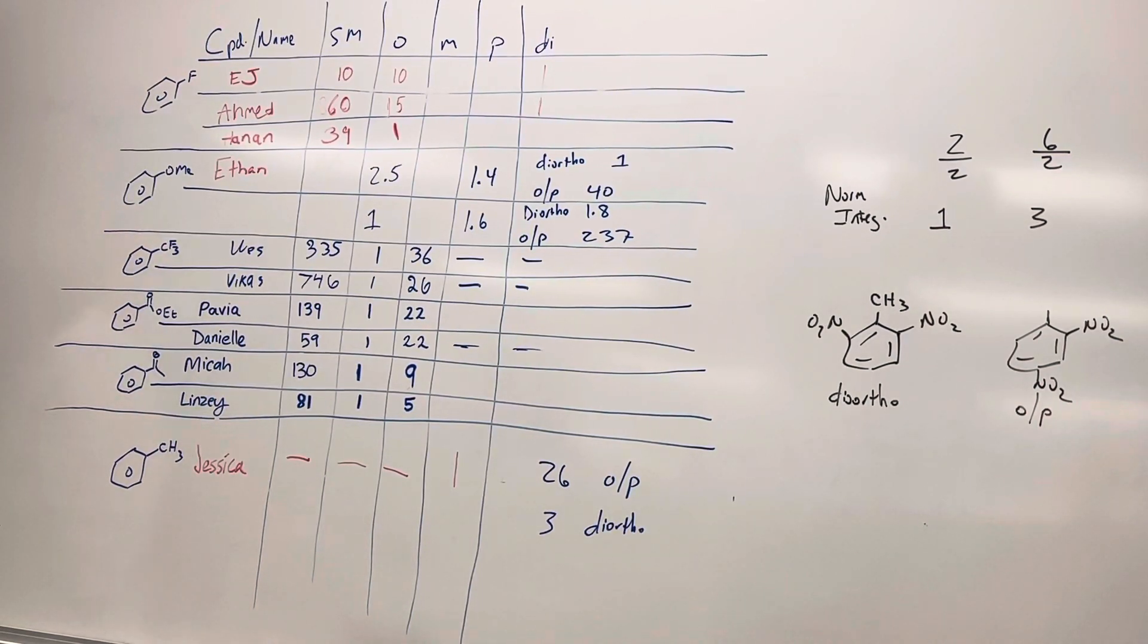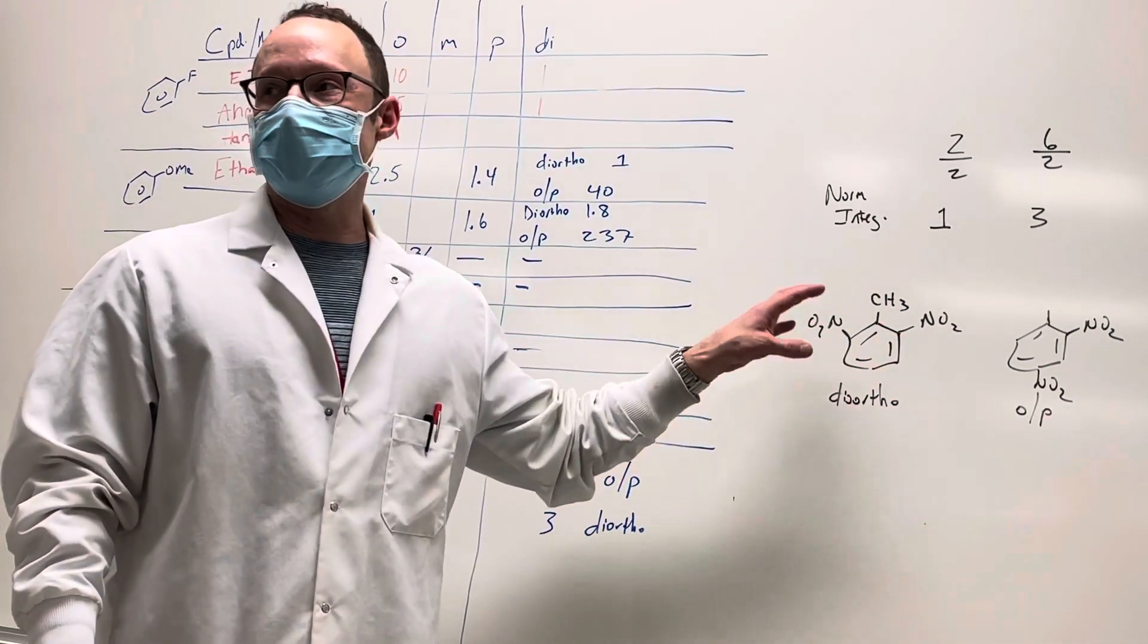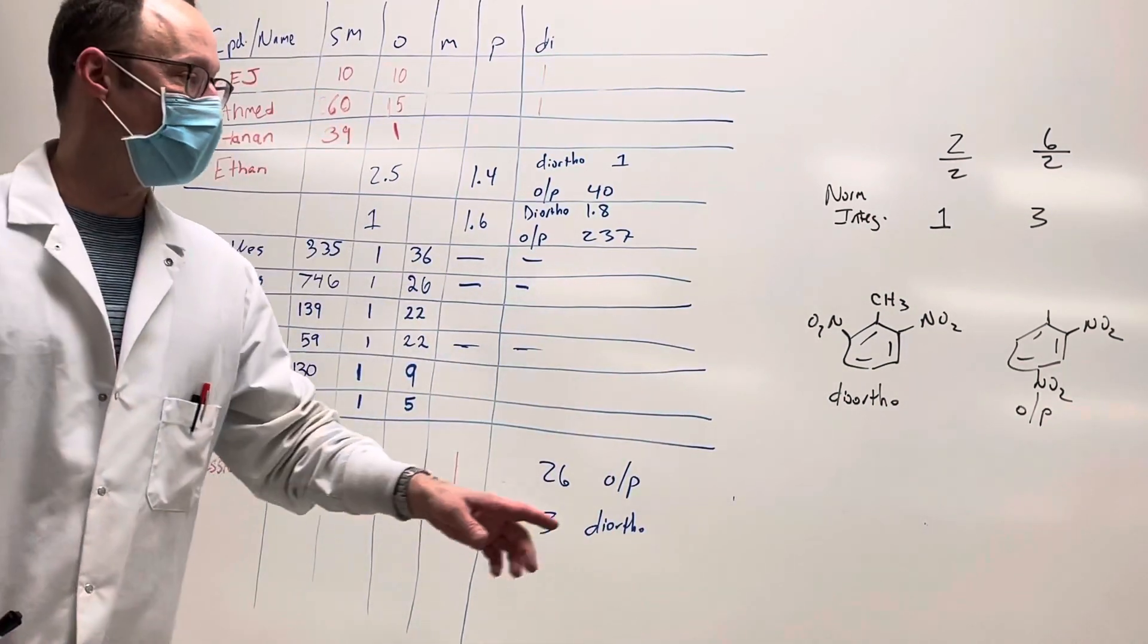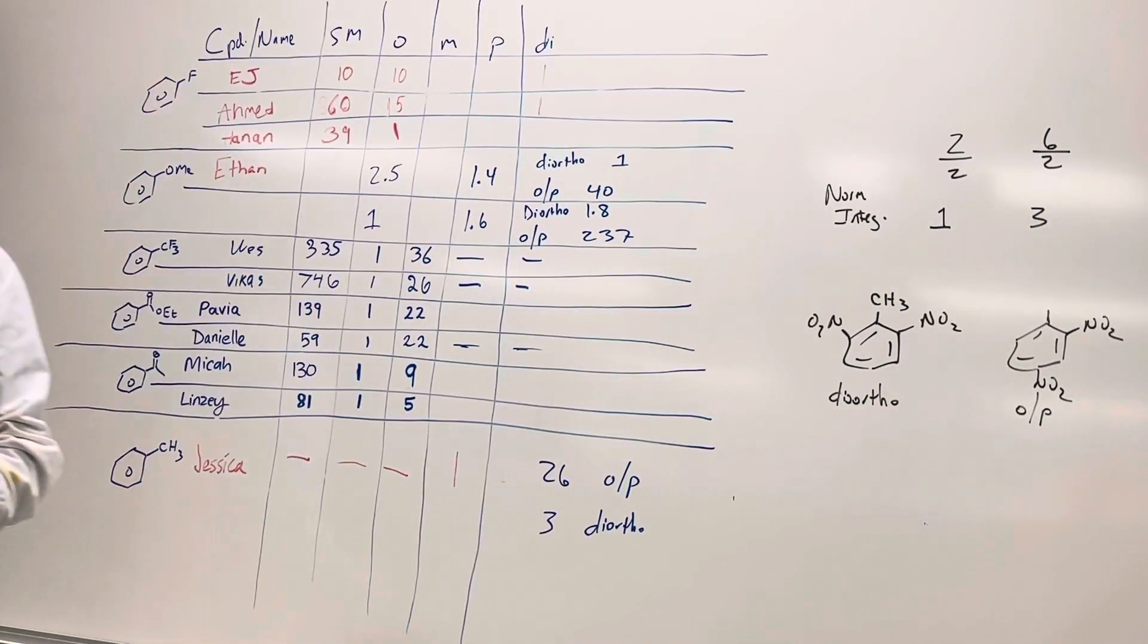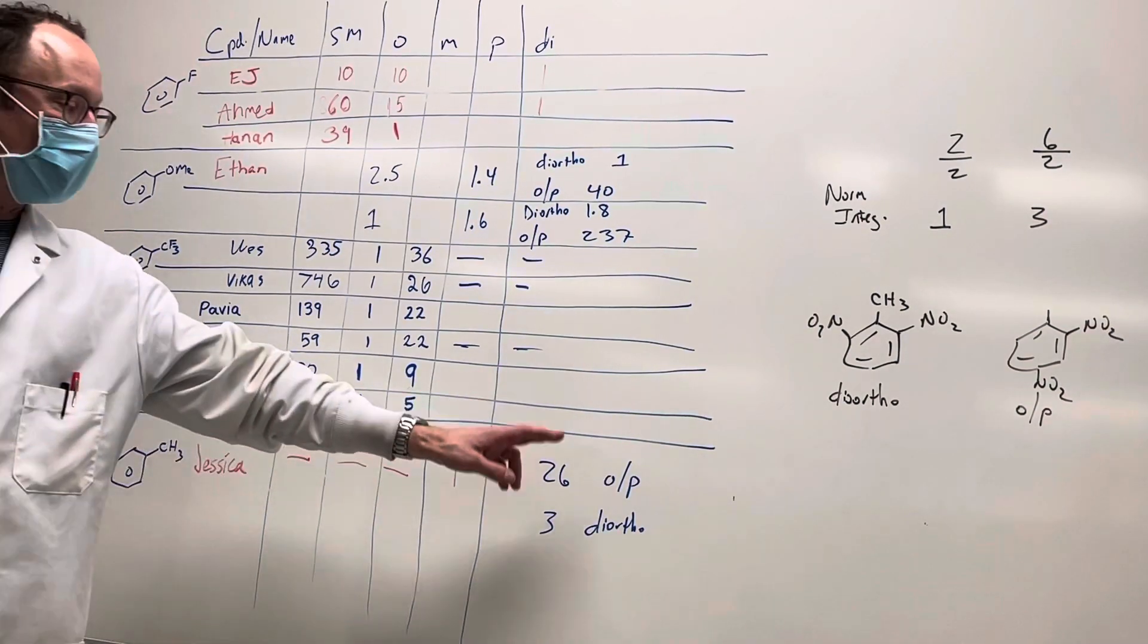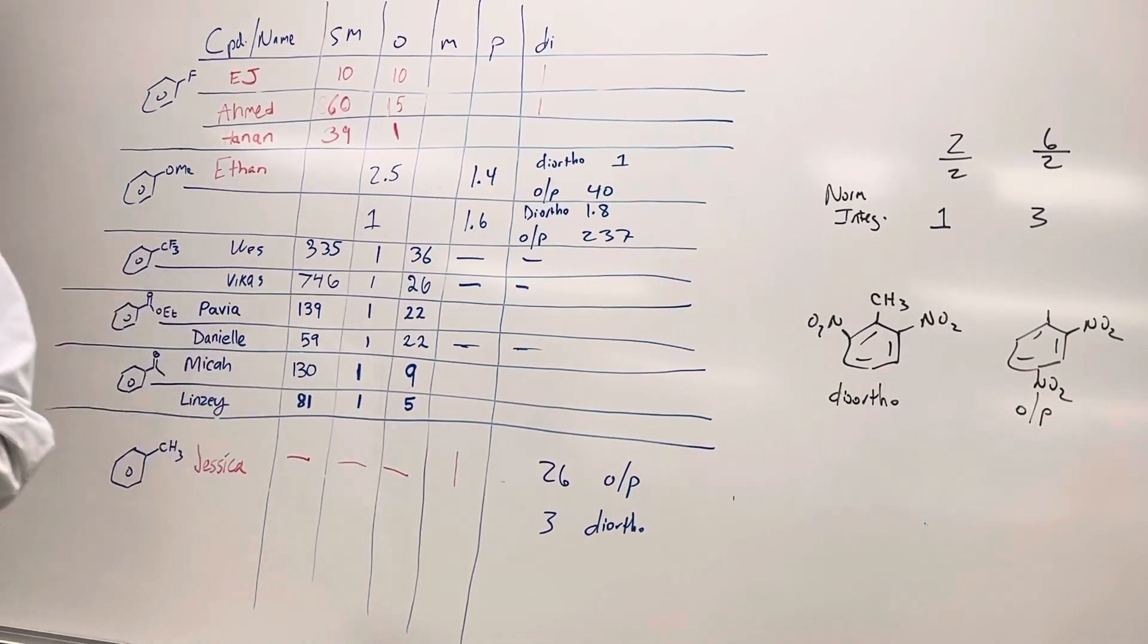Is it just the steric? Yeah. So whenever you have these groups that are all right next door to one another, that's not exactly a favorable orientation because it's just steric strain. It's a lot better to have those nitro groups away from one another than all bunched up together. But what we see is not maybe all that surprising where because of the presence of the activating group, the majority of your product is actually di-nitrated product. Is there any questions on this or the interpretation of this?